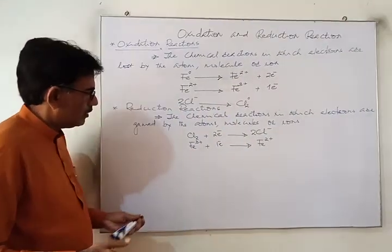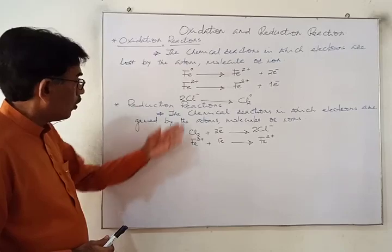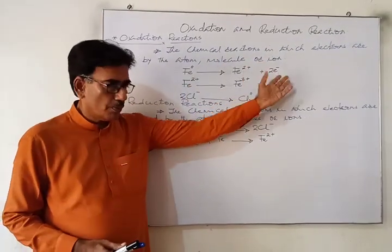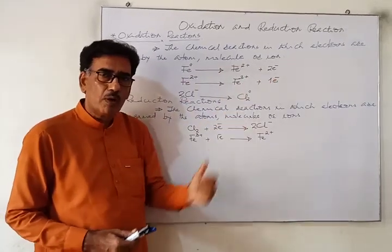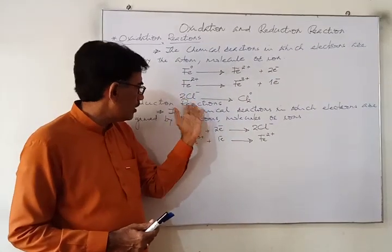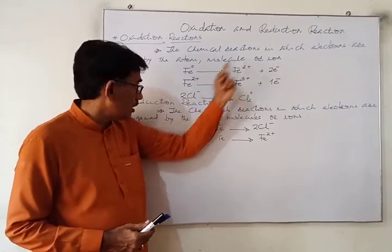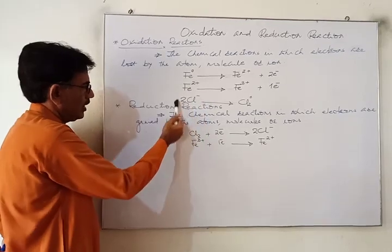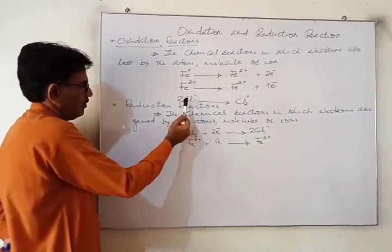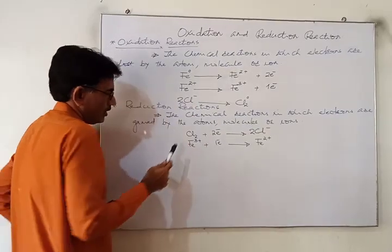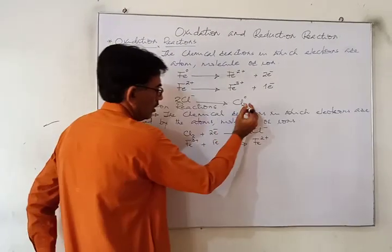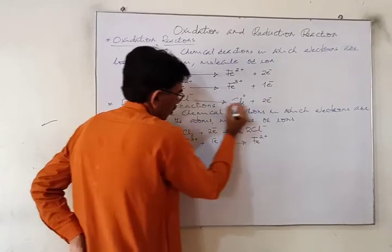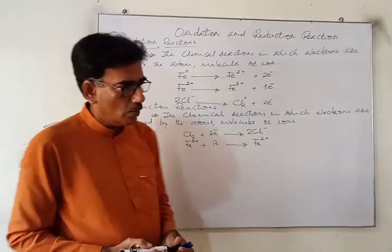We also have the example of chloride ion — a negative ion — other than those positive ions which are converted to more positive states. In negative ions, oxidation can also take place and electrons are also lost. In this case, chloride ions on loss of one electron each are converted into the neutral form of chlorine.